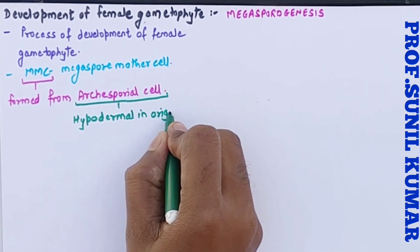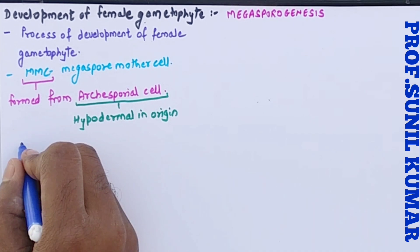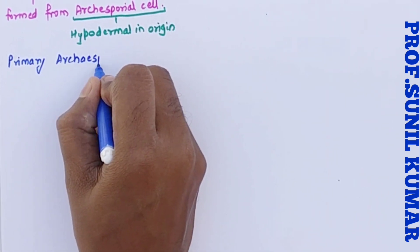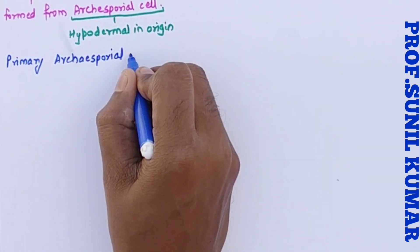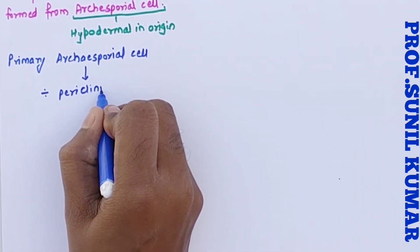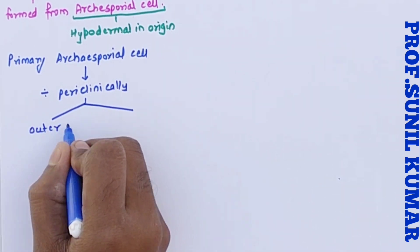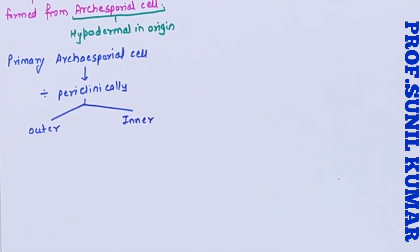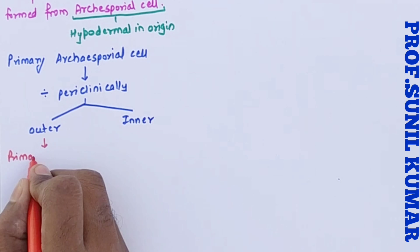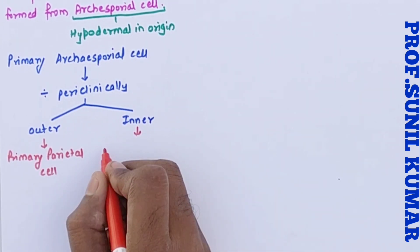The archesporial cell is hypodermal in origin, meaning it has originated from the ovary walls. The primary archesporial cell divides periclinically and it forms two cells: an outer cell and an inner cell. The outer cell is called the parietal cell, also known as the primary parietal cell, and the inner cell is called the primary sporogenous cell.